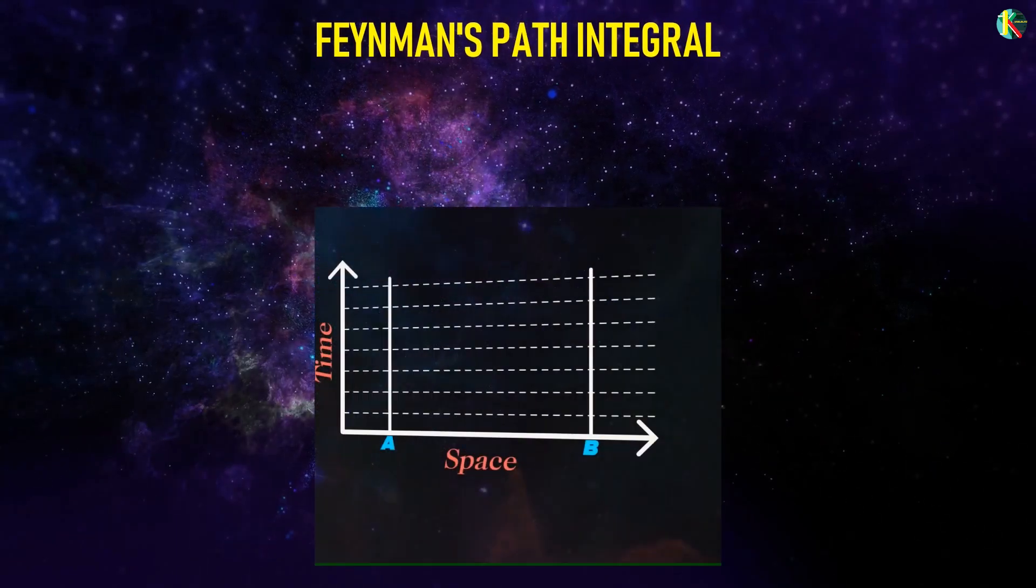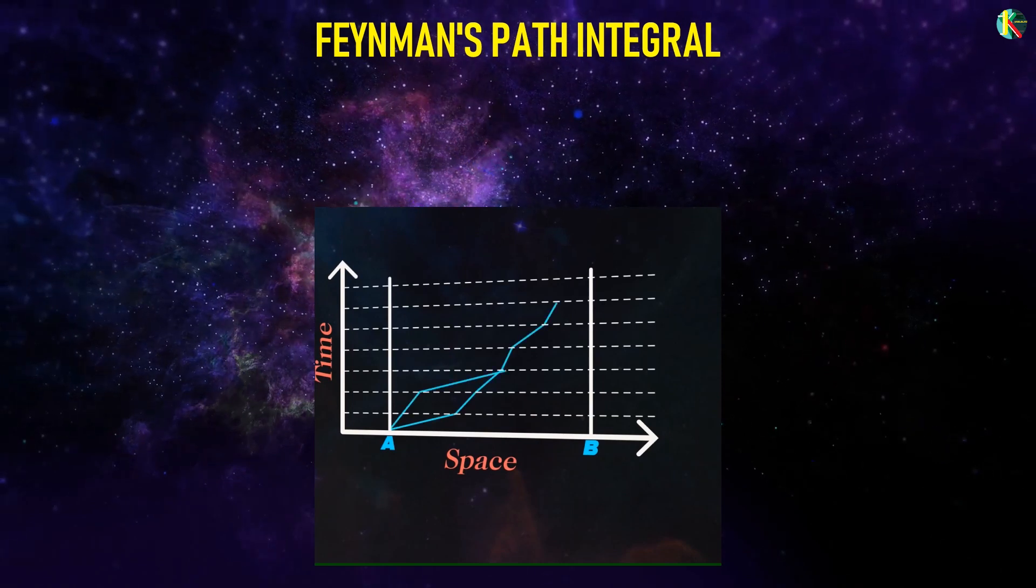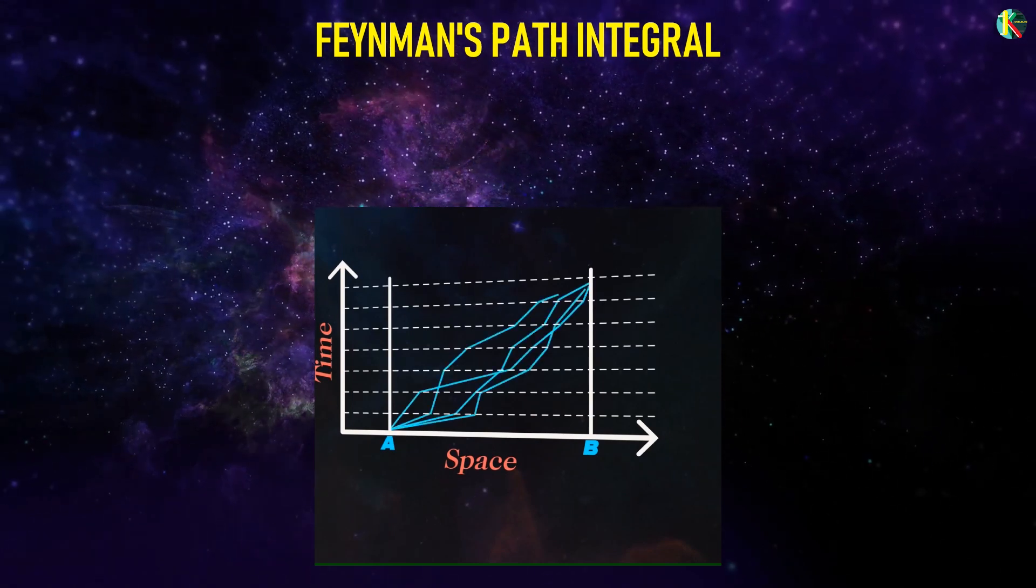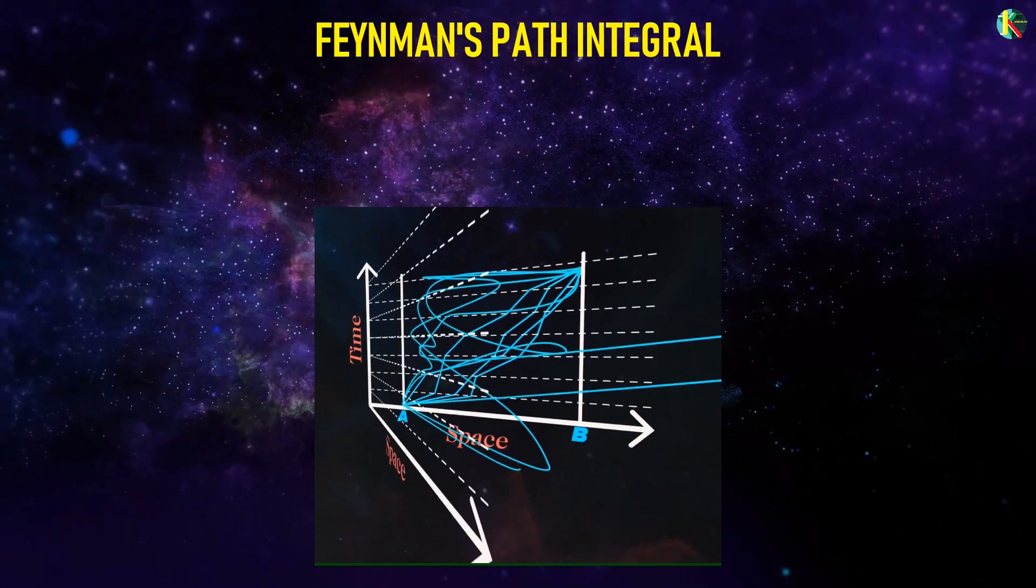Feynman's path integral shows us that to properly calculate the probability of a particle travelling between two points, we need to add the contributions from all conceivable paths between those points, including the impossible ones.